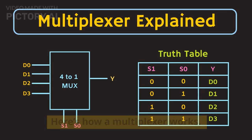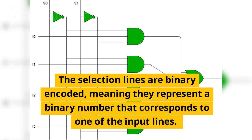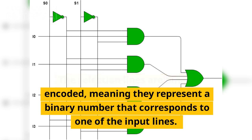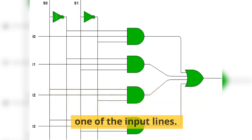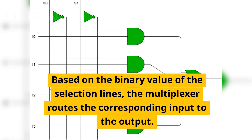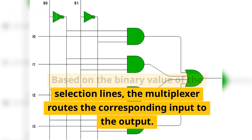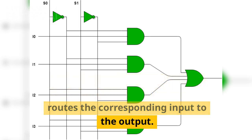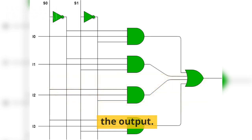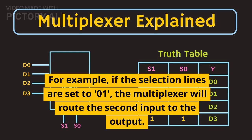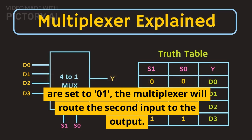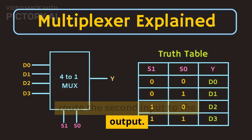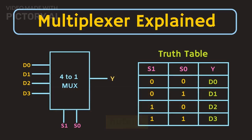Here's how a multiplexer works. The selection lines are binary encoded, meaning they represent a binary number that corresponds to one of the input lines. Based on the binary value of the selection lines, the multiplexer routes the corresponding input to the output. For example, if the selection lines are set to 0,1, the multiplexer will route the second input to the output.